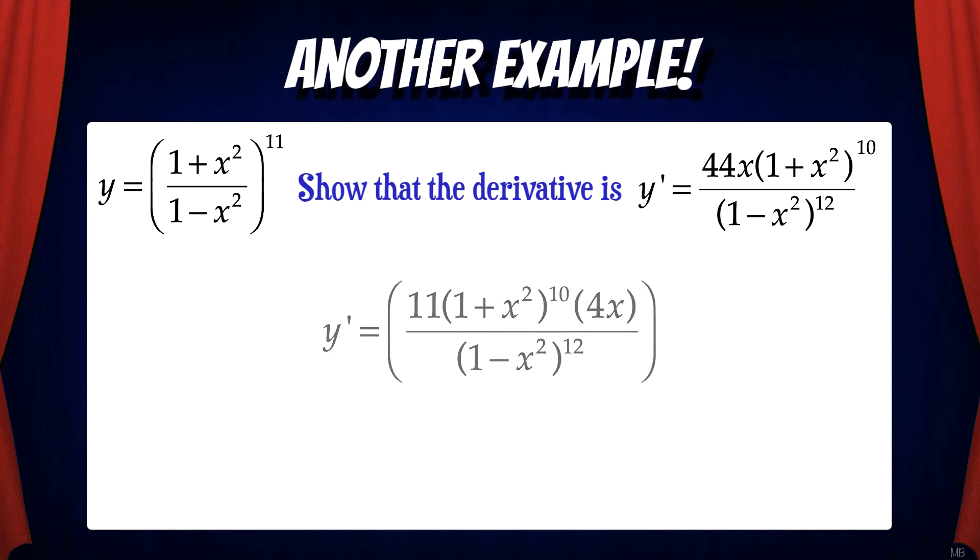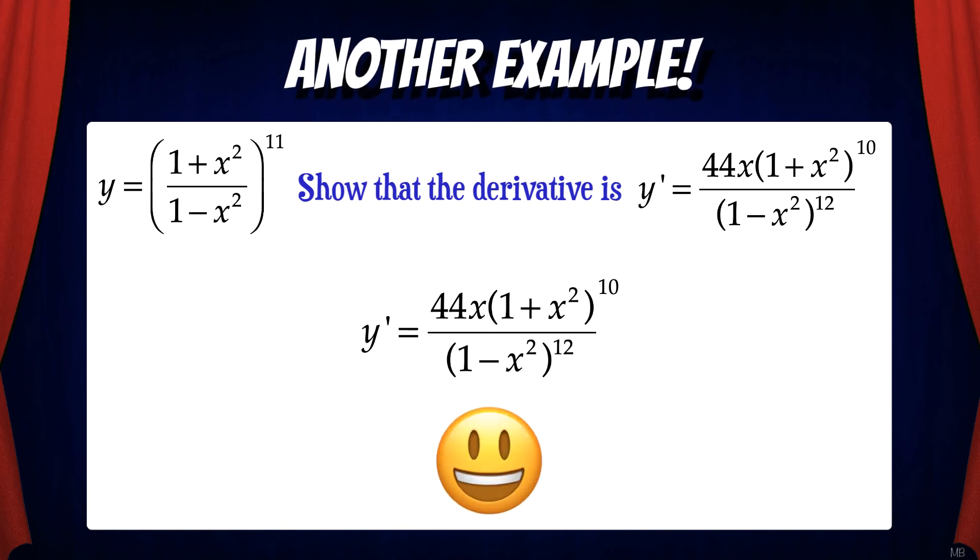All we need to do now is multiply the 4x times 11 and that gives us the 44x. And now we have our derivative in the final form that was originally asked for. We got it!